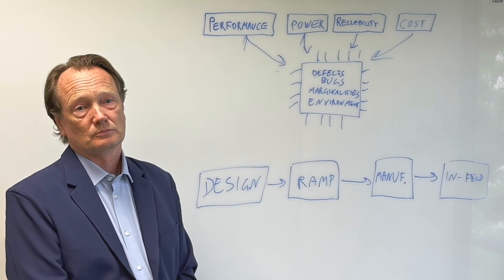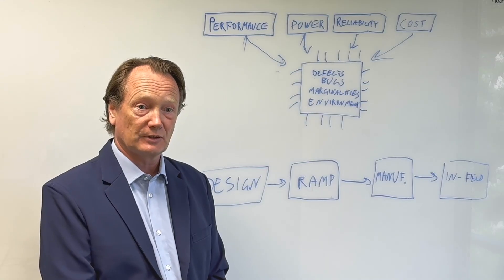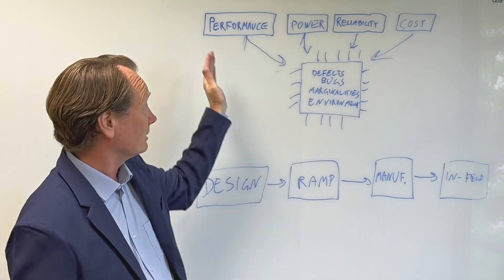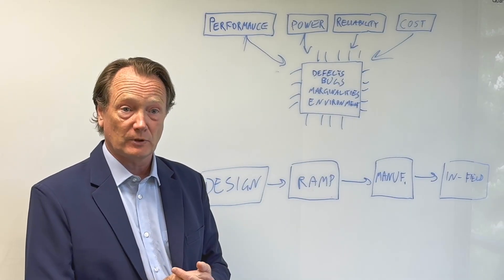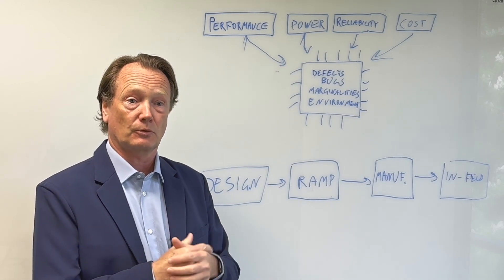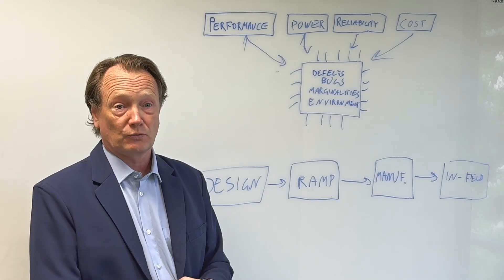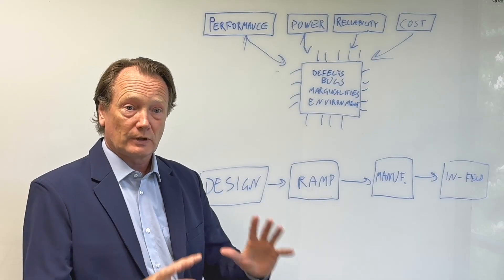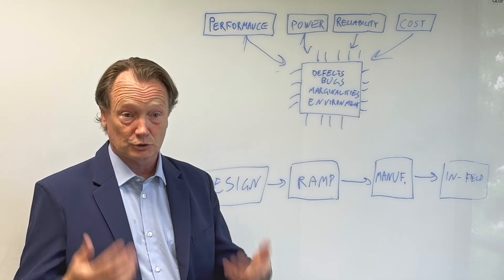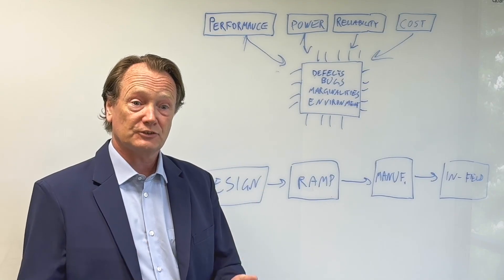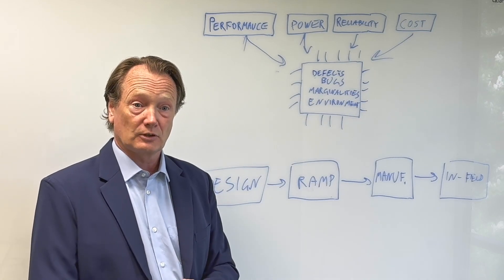Is one of the goals here to actually reduce the amount of margin you need in a design? Reducing margin is one of the goals. That relates to what we talked about earlier — meeting multiple requirements at the same time, wanting to be as close to the edge as you can. If your competitor is building a 3.2 gigahertz device, you want to be able to sell yours as a 3.3 gigahertz device. In many segments, competition is so fierce that you can't over-engineer things anymore. Your insurance policy then is to be able to test, validate, and keep on testing in the field that your device is still operating the way it's supposed to.